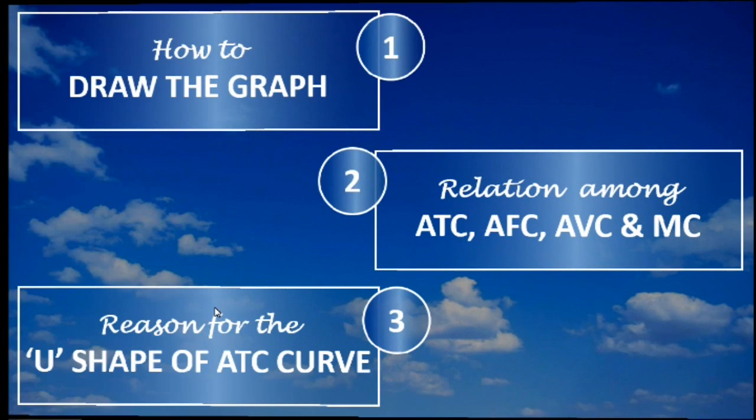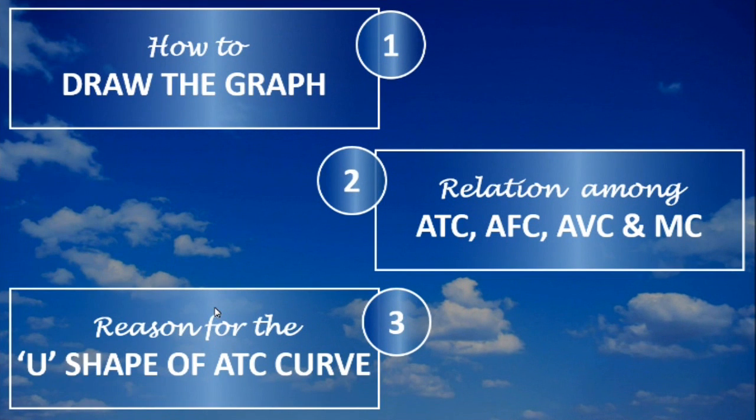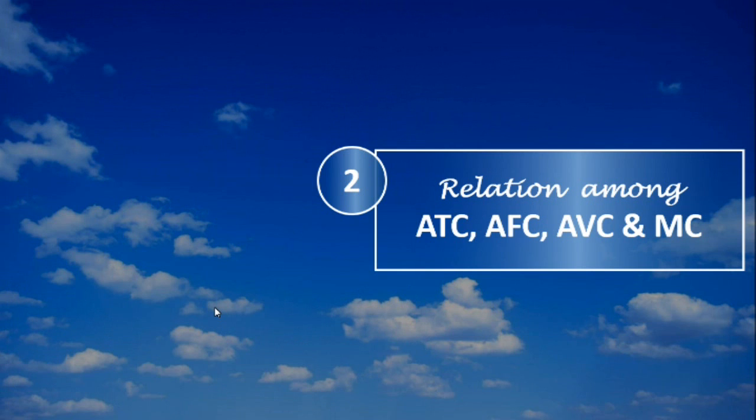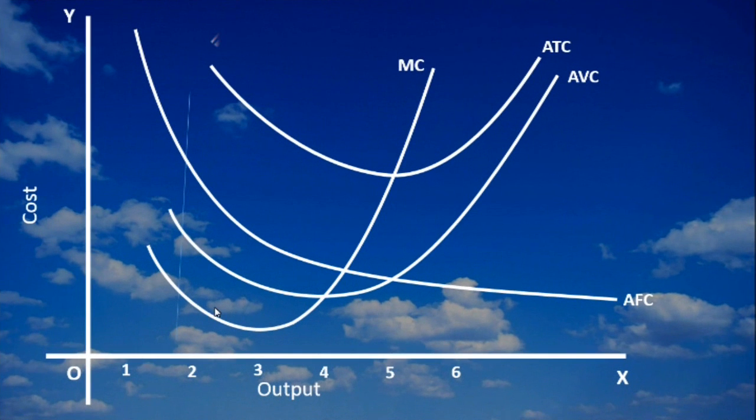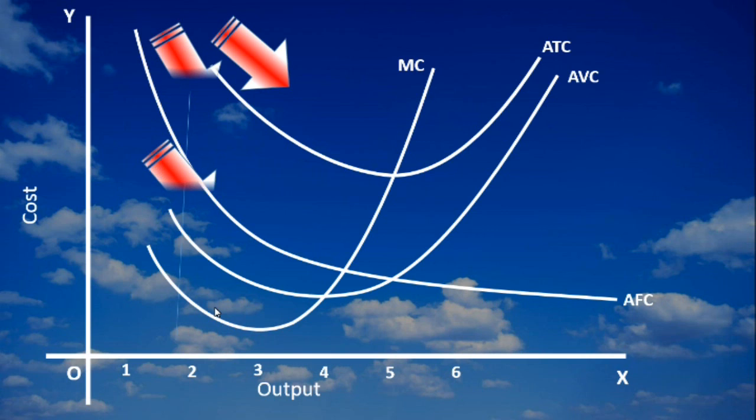We shall turn to the relation. First relation. To begin with, Average total cost curve falls. Because Average fixed cost and average variable cost are falling.